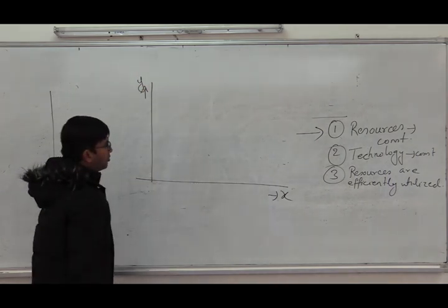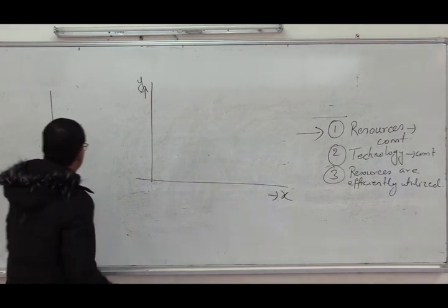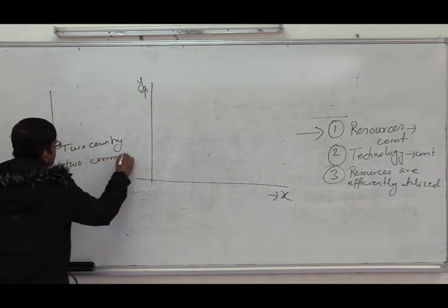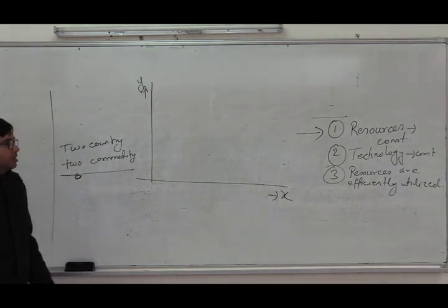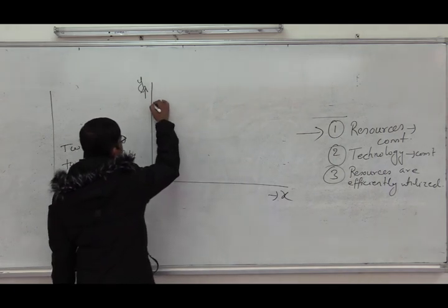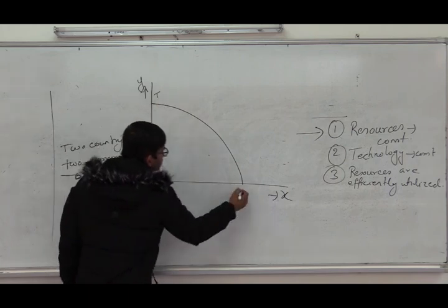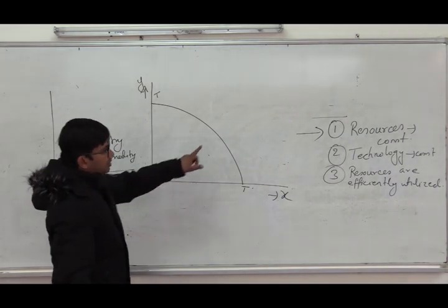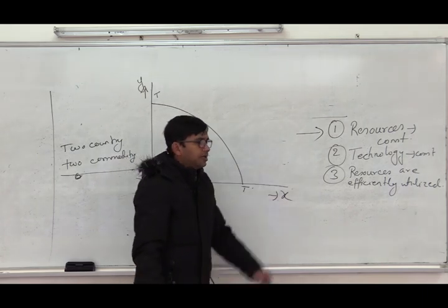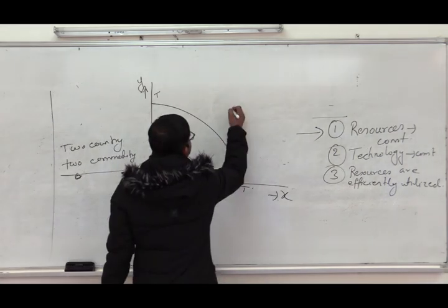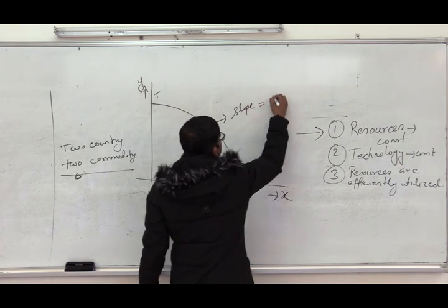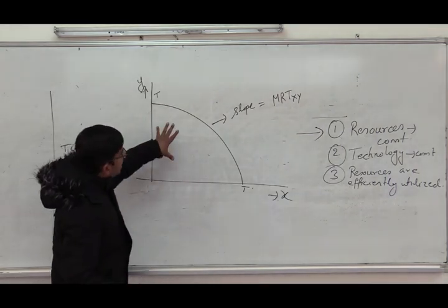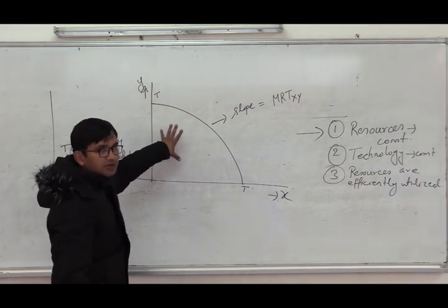Let's draw the PPC. The vertical axis represents the quantity of Y produced and the horizontal axis represents the quantity of X produced. This is a two-country, two-commodity framework. The curve TT is the production possibilities curve that represents the locus of different combinations of two commodities that a country can produce, given that resources are constant, technology is constant, and resources are efficiently utilized. The slope of the PPC gives us the marginal rate of transformation between X and Y.